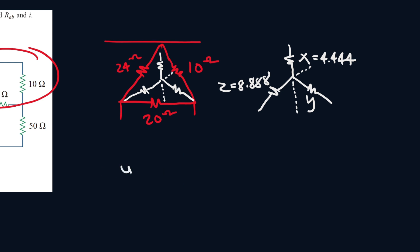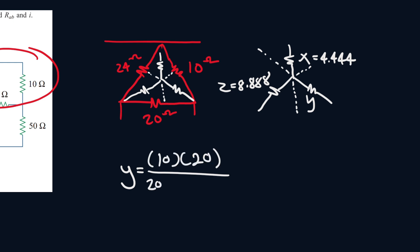Now for the last one, we have Y. Let's draw a line going this way — we see it would hit the 24-ohm resistor. So it'll be 10 times 24, which is 240, all over 20 plus 10 plus 24. That gives us Y equals 3.703 ohms.